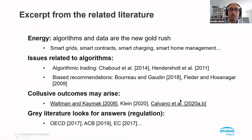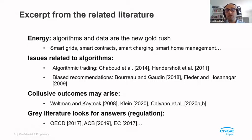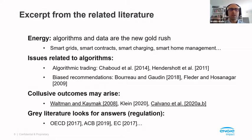The works most interesting to us are those of Calvano et al., who claim in their setting that algorithms are deploying explicit punishment strategies. And finally, there is the regulatory literature looking at the current framework — at least in Europe — and all these papers agree that today we don't have the means to regulate these algorithms. We don't even have the means to test whether they are colluding or not, because of issues of explainability and responsibility of algorithms. So there is definitely regulatory work to be done.